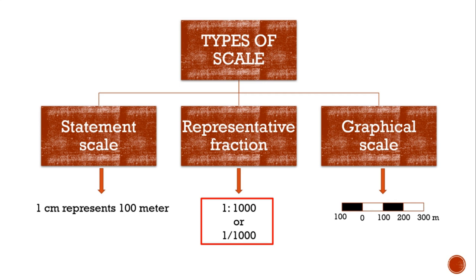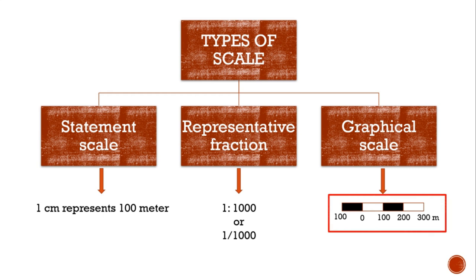The third type is graphical scale. It is the representation of scale by means of a line bar with primary and secondary divisions marked on it. The unique advantage of the graphical scale is that it remains valid even when the map is reduced or enlarged.